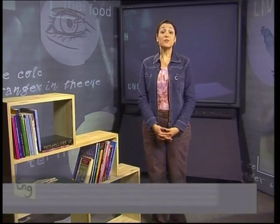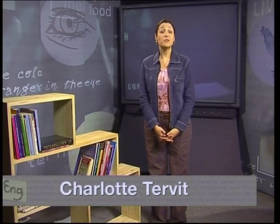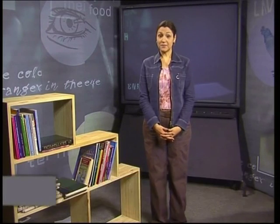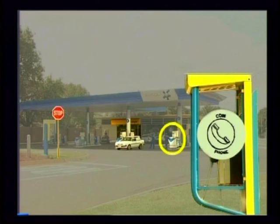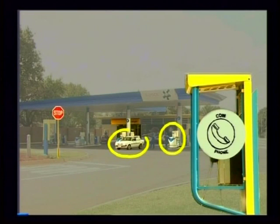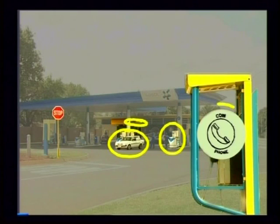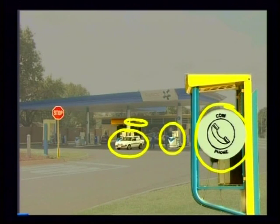Imagine if this were a French petrol station. We would have the following: la pompe à essence, la voiture, le magasin, le téléphone et l'arrêt.